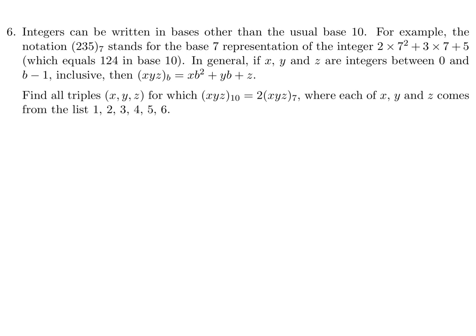Integers can be written in bases other than the usual base 10. For example, the notation (2,3,5) in base 7 stands for the base 7 representation of the integer 2 times 7 squared plus 3 times 7 plus 5, which equals 124 in base 10. In general, if X, Y, and Z are integers between 0 and B minus 1, inclusive, then (X,Y,Z) to the base B is X times B squared plus Y times B plus Z. Find all triples (X, Y, Z) for which (X,Y,Z) base 10 equals 2 times (X,Y,Z) base 7, where each of X, Y, Z comes from the list 1 through 6.